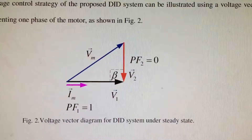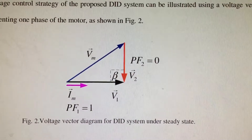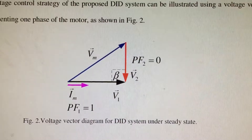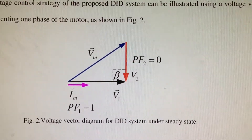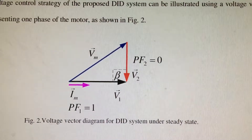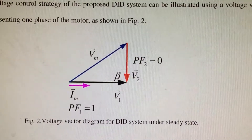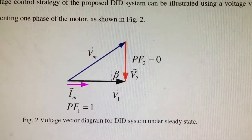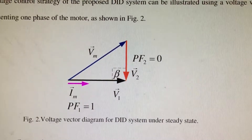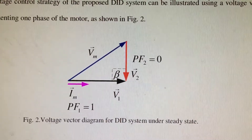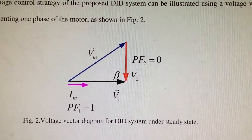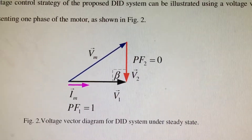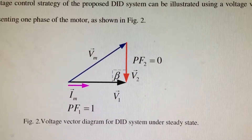The right-side inverter is called the floating bridge. In the voltage vector diagram for the open-ended winding induction motor, the voltage vector V1 represents the voltage supplied by the main bridge. The current vector IM represents the induction motor current. Because V1 and IM are in phase, the main bridge only supplies real power, so its power factor is one. The voltage vector V2 represents the voltage supplied by the floating bridge. Because V2 and IM are perpendicular, the floating bridge only supplies reactive power, so its power factor is zero.